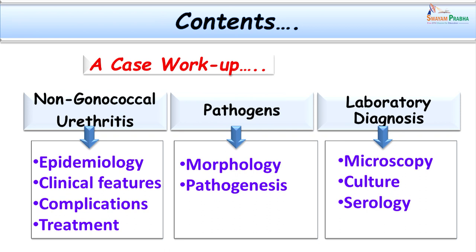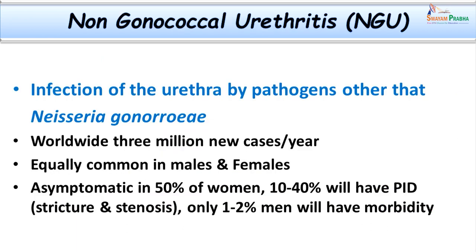With the discussion of this case, we have learned that using clinical as well as laboratory help, we diagnosed non-gonococcal urethritis caused by the Chlamydia group of organisms. We will now learn more about non-gonococcal urethritis — what it is, its epidemiology, clinical presentations, etiology, complications, treatment, and pathogenesis. Non-gonococcal urethritis, as the name itself indicates, is infection of the urethra by pathogens other than Neisseria gonorrhoeae.